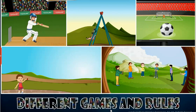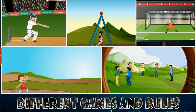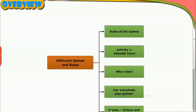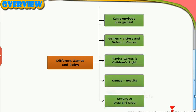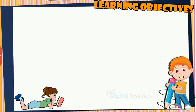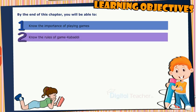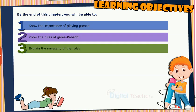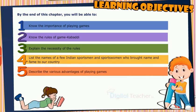Welcome to the chapter, Different Games and Rules. This slide presents the overview of the chapter. Learning Objectives: By the end of this chapter, you will be able to know the importance of playing games, know the rules of game Kabaddi, explain the necessity of the rules, list the names of a few Indian sportsmen and sportswomen who brought name and fame to our country, and describe the various advantages of playing games.